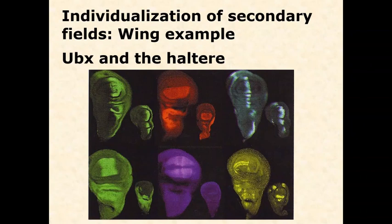And so we start with the basic primary field of, hey, let's grow an appendage. Oh, it's going to be a wing. And then UBX comes in and modifies it, and essentially by different genes being expressed, but essentially turns that wing into a haltere.